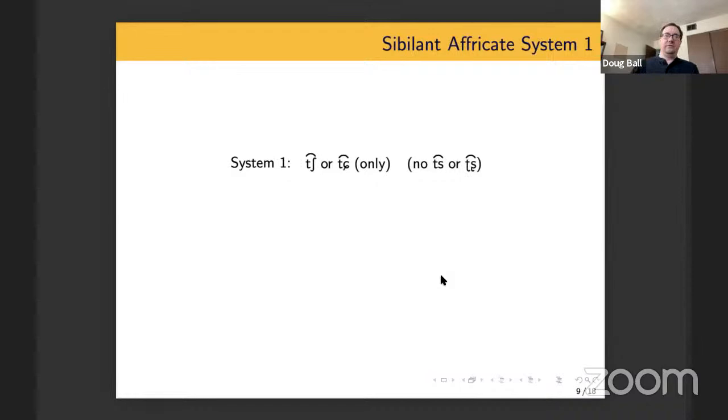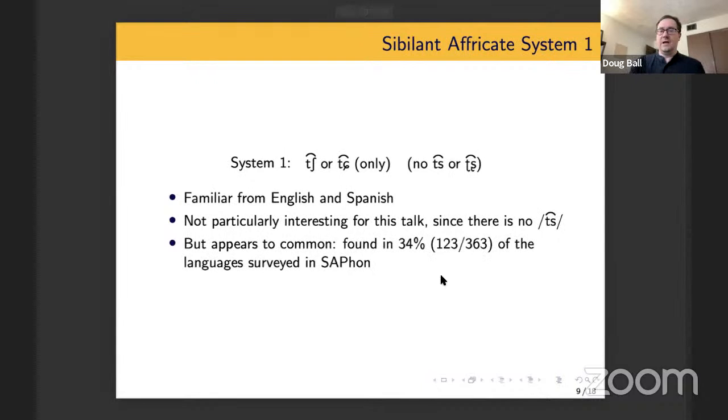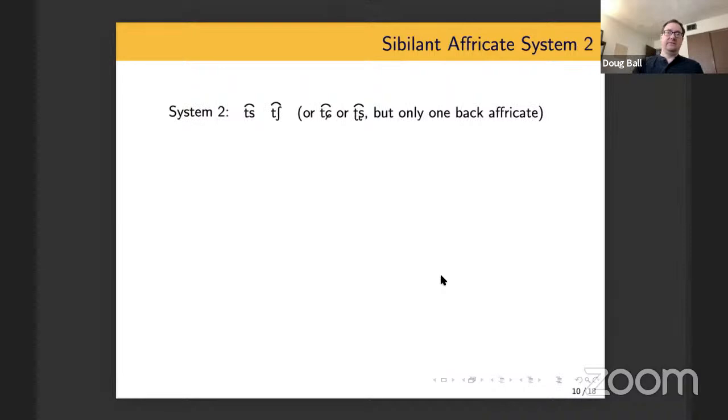So the numbers of these systems are kind of arbitrary, but what I'm calling system one has just a back sibilant affricate, usually CH. And this is familiar because both English and Spanish have this system amongst other languages. And it actually isn't something that I want to dwell on a ton in this talk because there's no TS in this system, but I felt that I should mention it because it is fairly common. And just looking through SAPhon, I found it in 34% of the languages surveyed there, and I think it likely is the most common type of sibilant affricate system in the world, though some of that's a little conjecture.